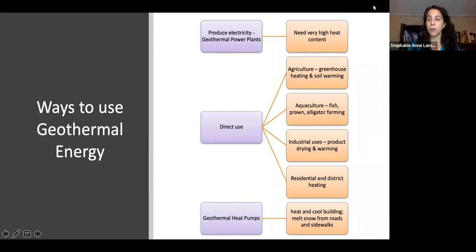The very high heat content is used to produce electricity, while direct use includes agricultural greenhouse heat and soil warming, aquaculture, industrial uses for drying and production, and residential and district heating. Geothermal heat pumps can heat or cool buildings or melt snow from sidewalks and roads.